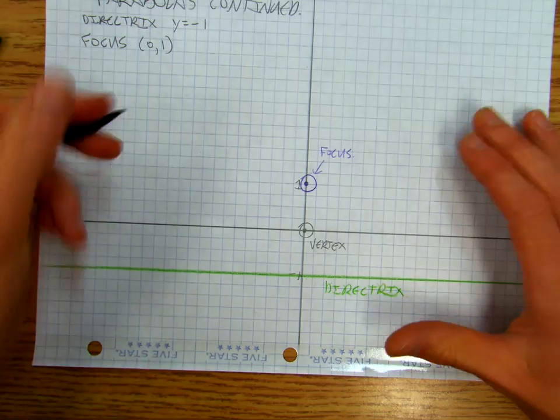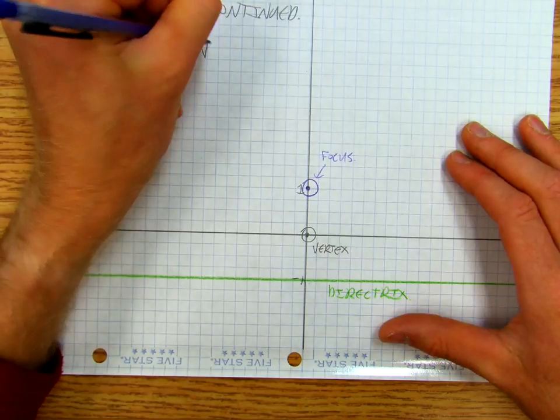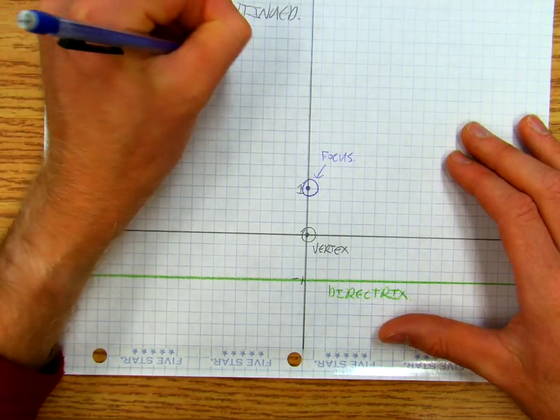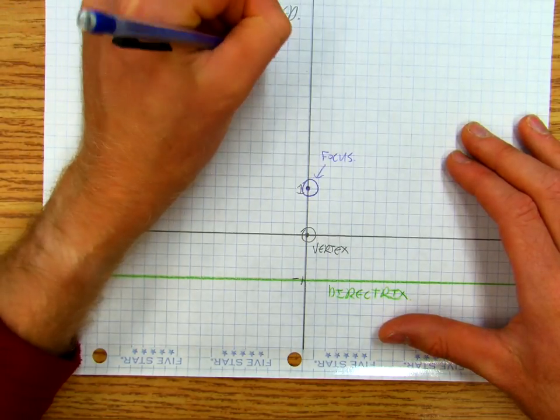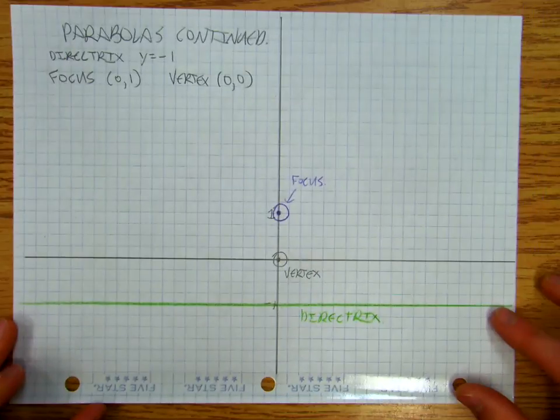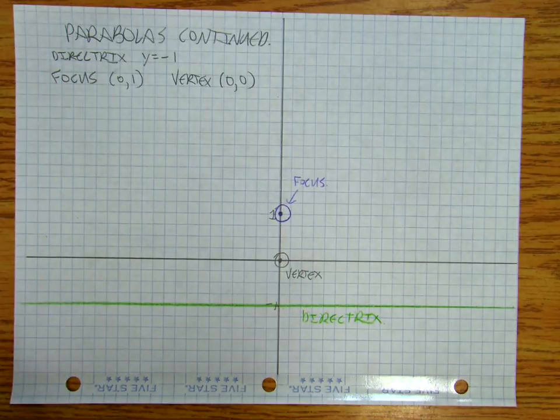And in this simple example, my vertex is at (0,0). And it won't be (0,0) in all my videos.